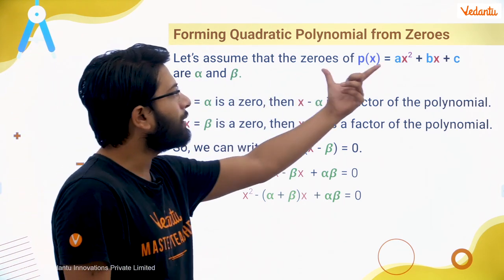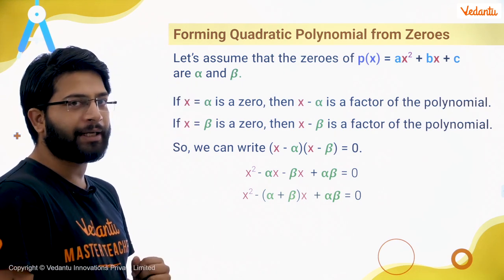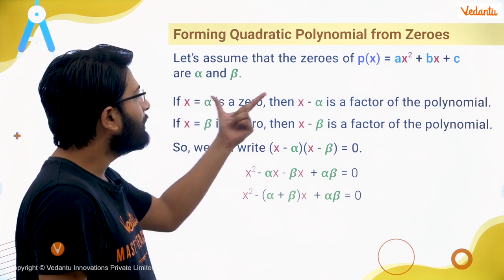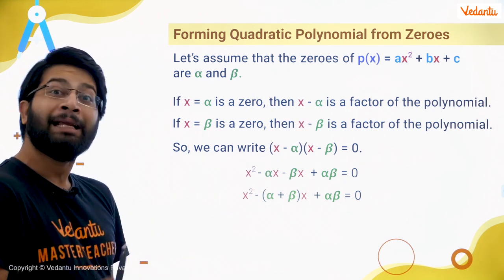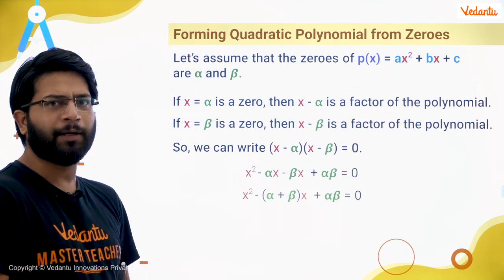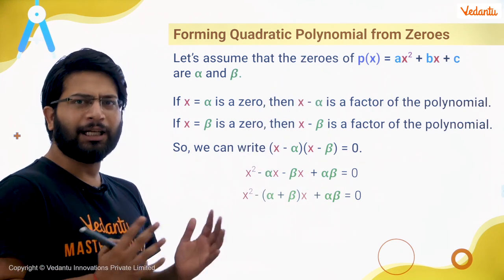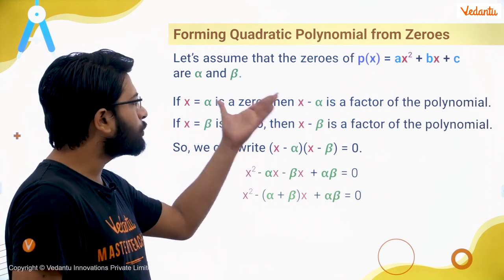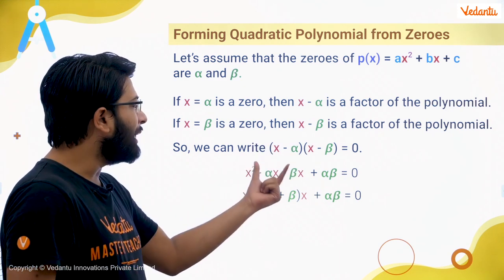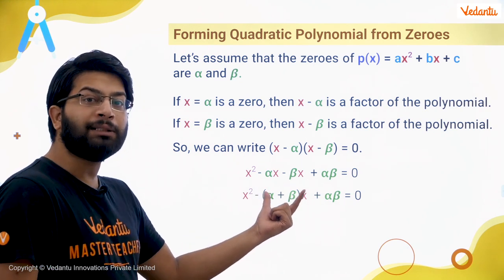Let's assume that a quadratic equation ax square plus bx plus c has the zeros alpha and beta. From the factor theorem, we can say that if x equal to alpha is the zero, then x minus alpha is a factor of the polynomial. In the same way, if x equal to beta is the zero, then x minus beta is a factor of the polynomial. Now we can write our quadratic equation as the product of its factors — x minus alpha into x minus beta. After multiplication, I will get x square minus (alpha plus beta)x plus alpha·beta equal to zero.